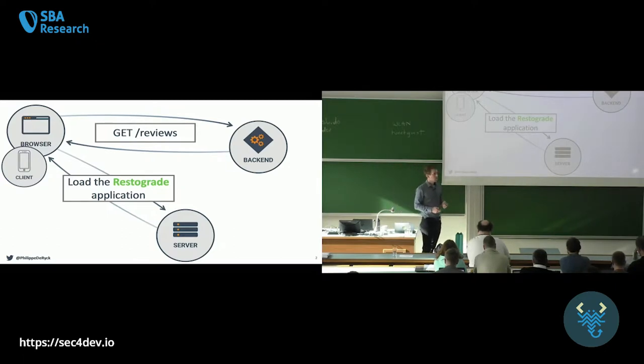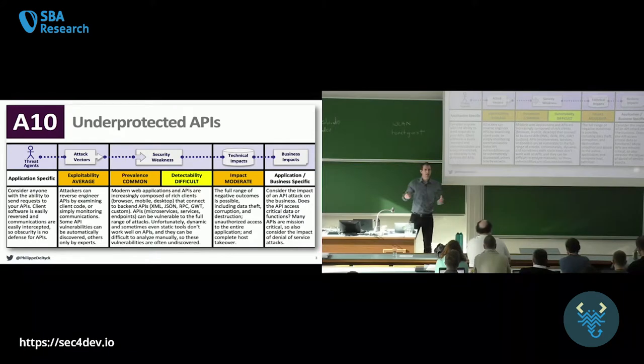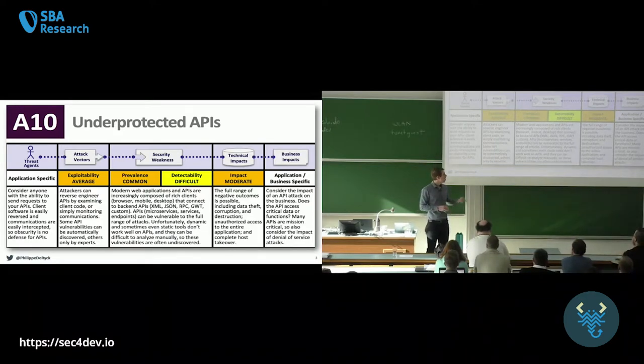Why am I going to talk about API security? Because at one point in time they almost put underprotected APIs in the OWASP top 10. This is a top 10 list of most important security vulnerabilities in web applications. Eventually they decided to kick it out again, but to me this is important that this is a real problem. API security is not a new problem. We see the same problems we had before just being reincarnated in an API-based context, and that's definitely going to be the main focus of this talk.